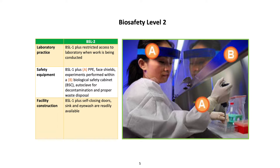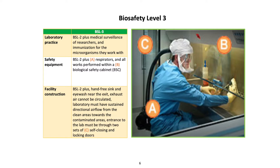BSL 3 laboratory practice: BSL 2 plus medical surveillance of researchers and immunization for the microorganisms they work with. Safety equipment: BSL 2 plus respirators; all work performed within a biological safety cabinet. Facility construction: BSL 2 plus hands-free sink and eyewash near the exit; exhaust air cannot be recirculated; laboratory must have sustained directional airflow from clean areas towards contaminated areas.